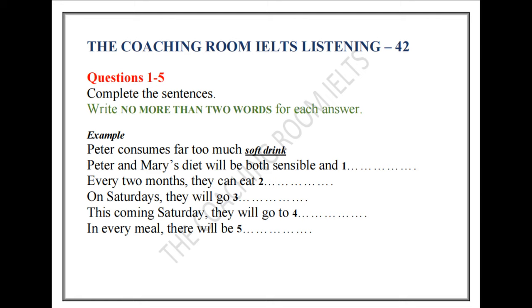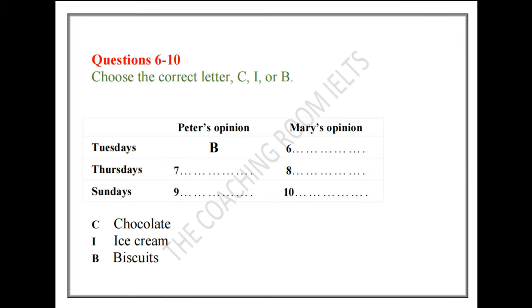Before you hear the rest of the conversation, you have some time to look at questions 6 to 10. Now Mary, you said we could have a little treat in our diet plan three times a week, specifically Tuesdays, Thursdays, and Sundays. Yes, a very small treat, but something to reward us for all the discipline shown. Such rewards will motivate us to continue the diet. So, on Tuesdays, what can I choose? You have a choice between a small serving of chocolate, ice cream, or biscuits. OK. Well, I'll go for the biscuits. I love those crunchy little things with my cup of tea. So do you, right? I do indeed, so I'll have them too.